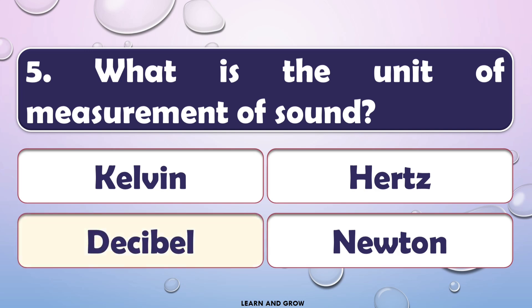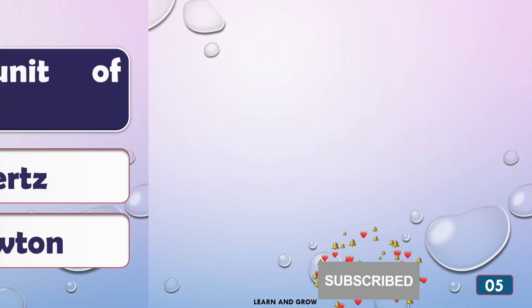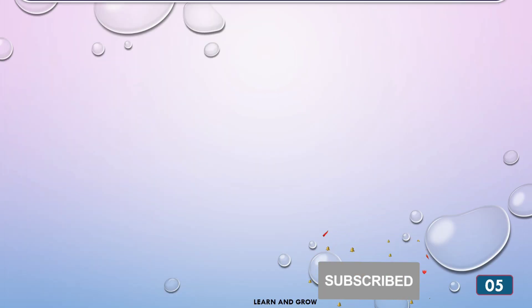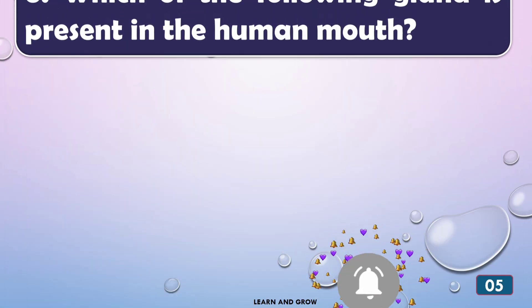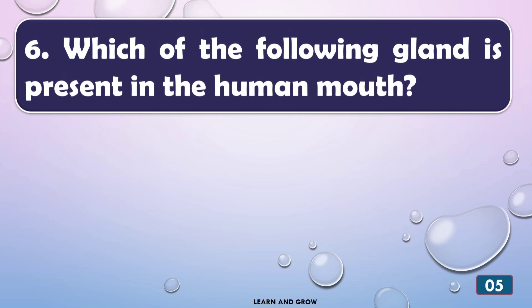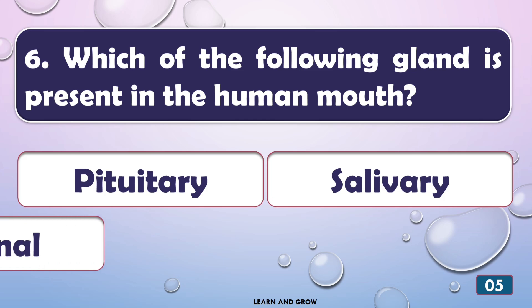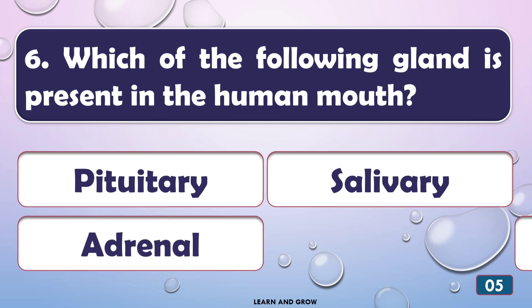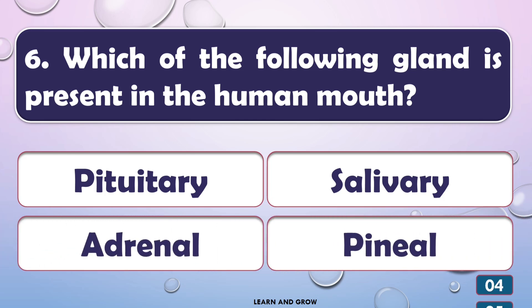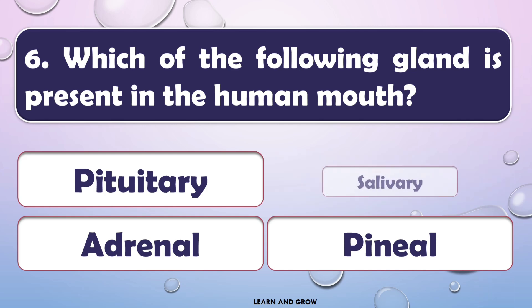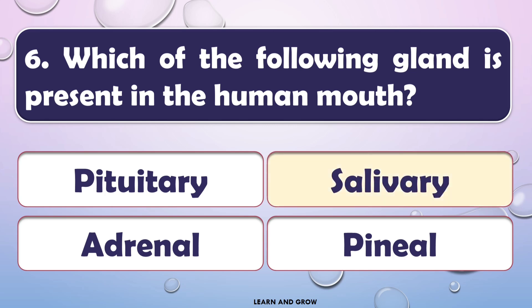The right answer is option C — decibel. The following gland is present in the human mouth — the right answer is option B.